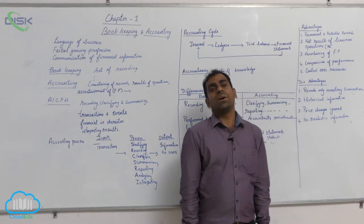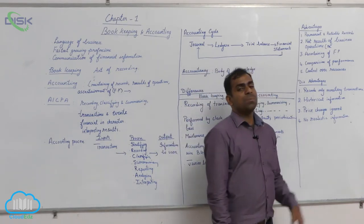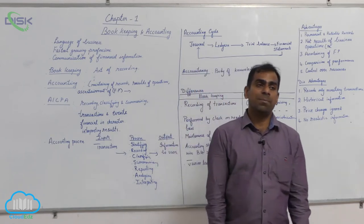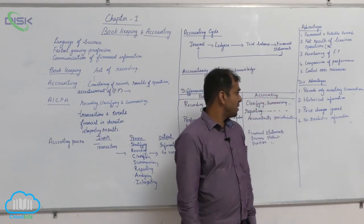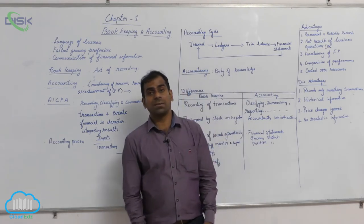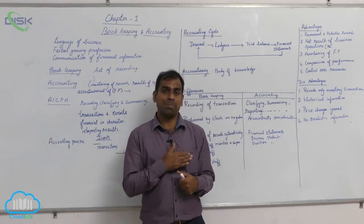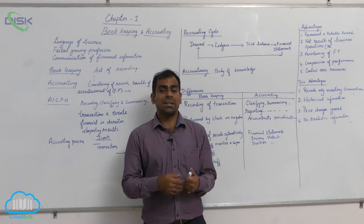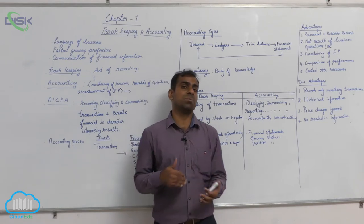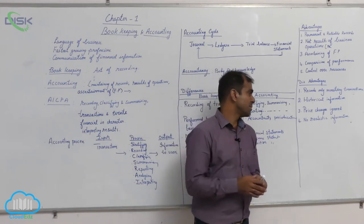Another disadvantage is that accounting provides only historical information. Historical information means accounting records only the events and transactions that have occurred in the past. It doesn't predict and it doesn't record any future possibilities as transactions.